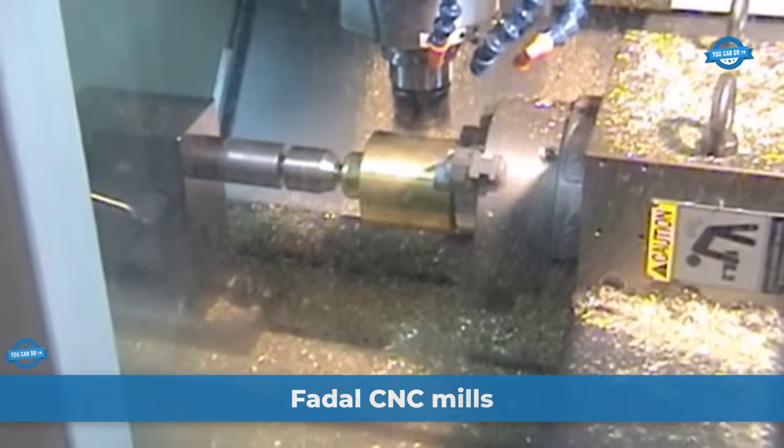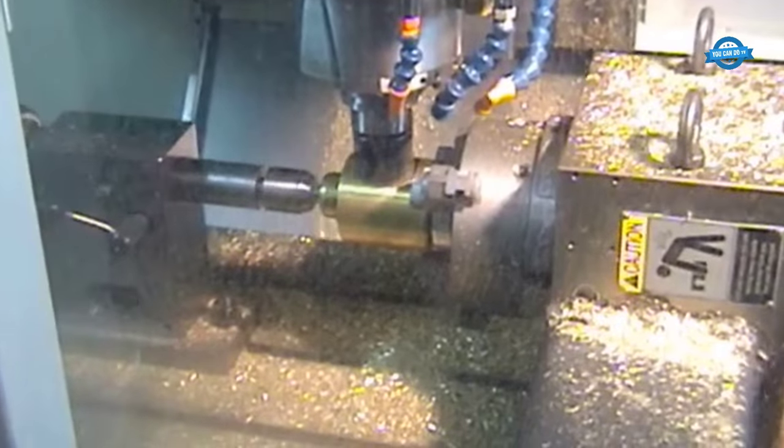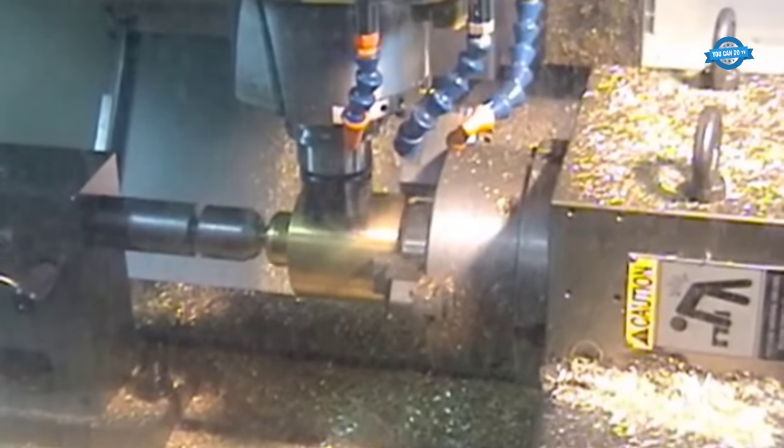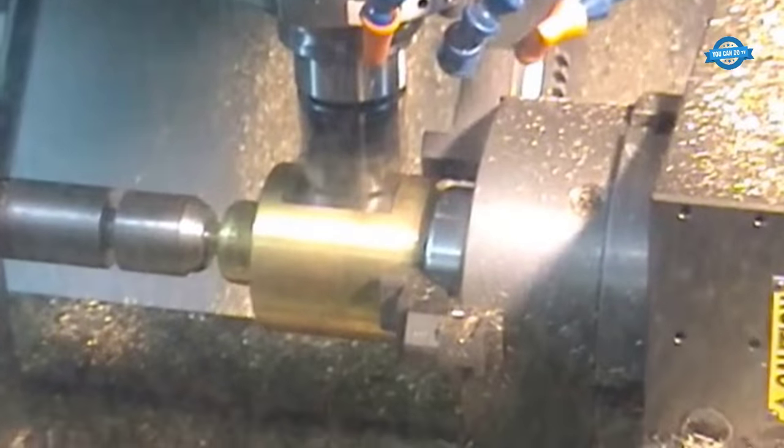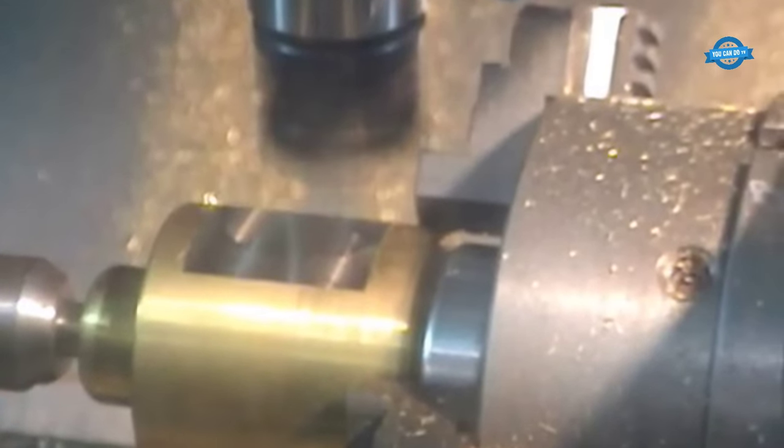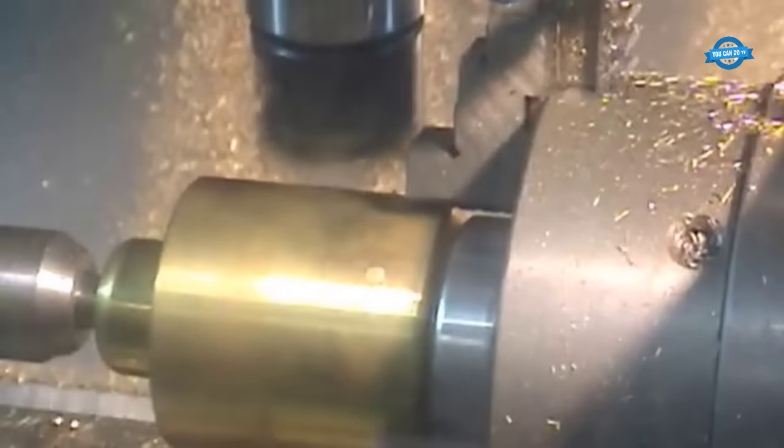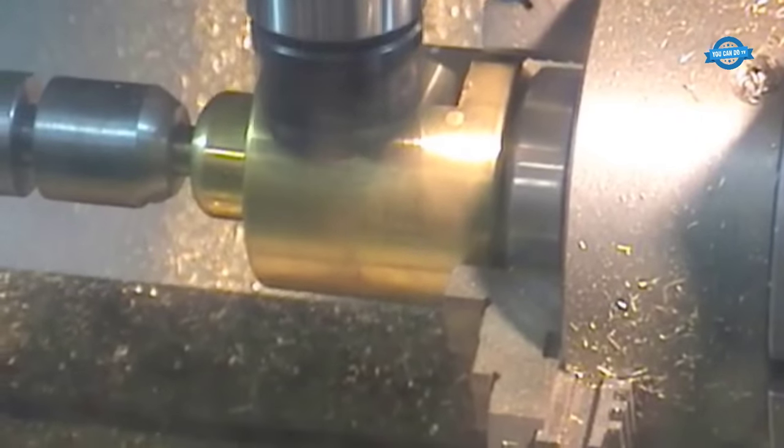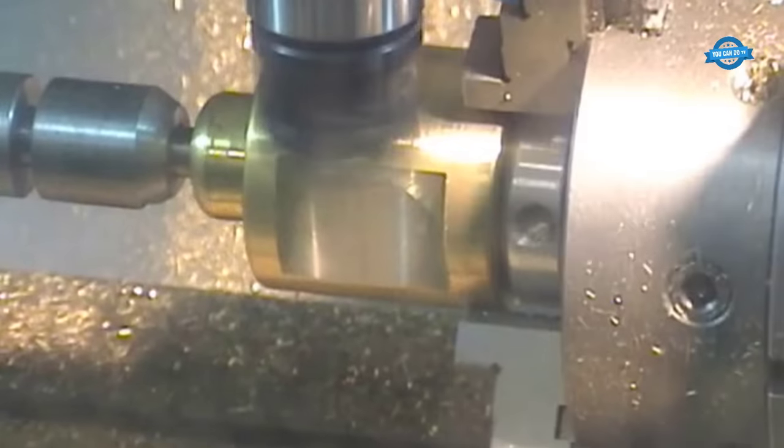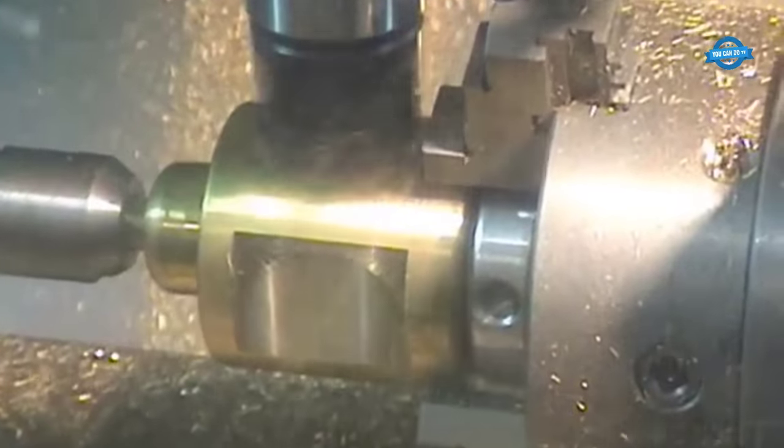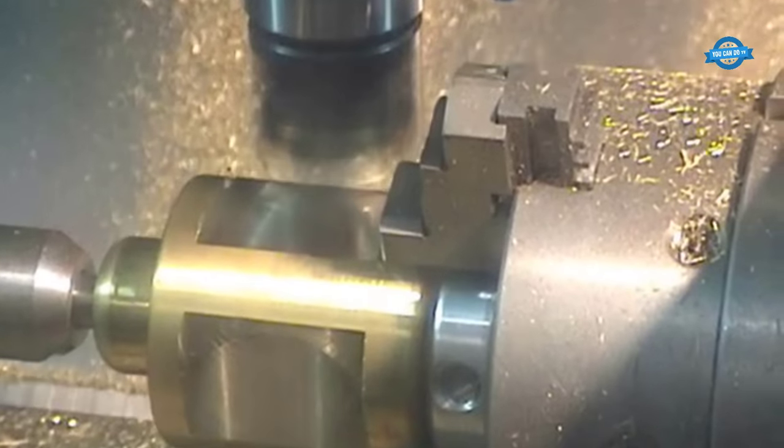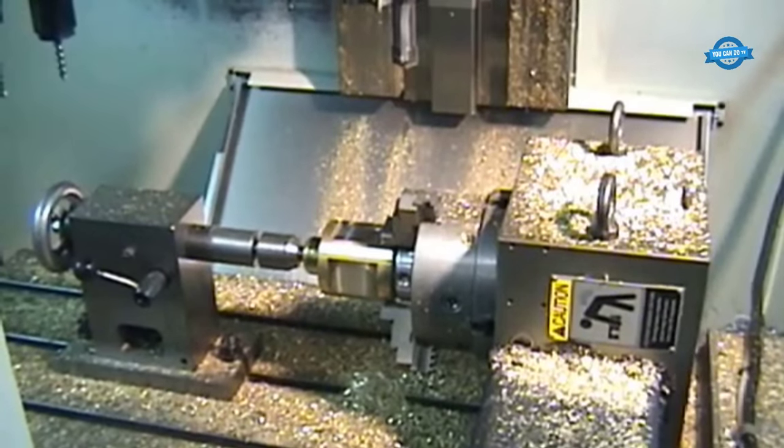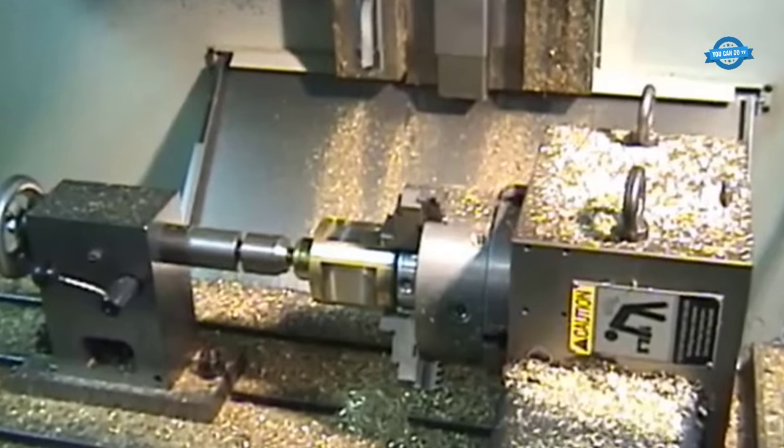FADL CNC mills are versatile machining tools designed to handle a wide range of materials, including brass. When machining brass using a FADL CNC mill with multi-axis capabilities, several key factors come into play to ensure efficient and accurate machining. For multi-axis machining, the most common setup is a three-axis mill with an added rotary table, or a four-axis mill with an integrated rotary axis. Some advanced setups may even have five-axis capabilities, allowing for more complex operations. The presence of multiple axes enables the machine to move the cutting tool along different directions simultaneously, enhancing the machining possibilities.